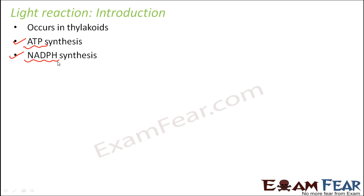So who will utilize the light energy? Who will absorb the light energy? The pigments which are present inside the plant. What is that pigment? Chlorophyll A. Where is chlorophyll present? It is present in the thylakoids inside the chloroplast. Therefore the light reaction will take place in the thylakoids.